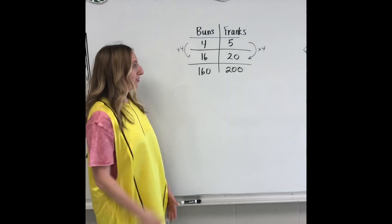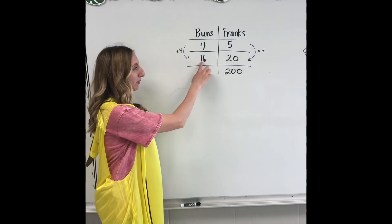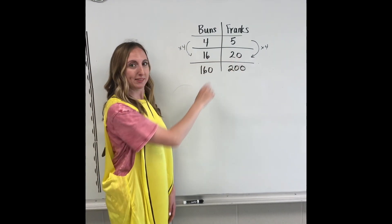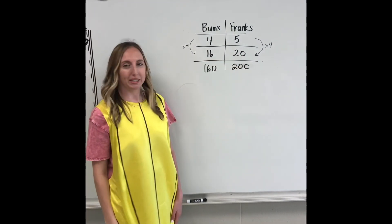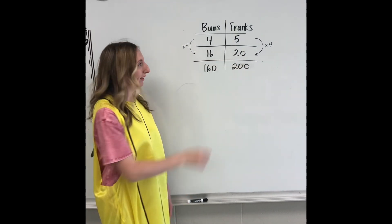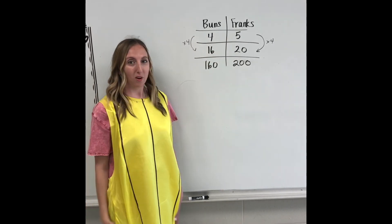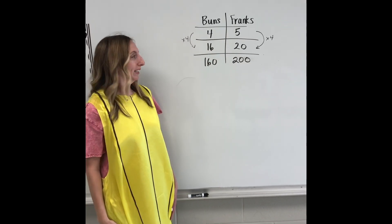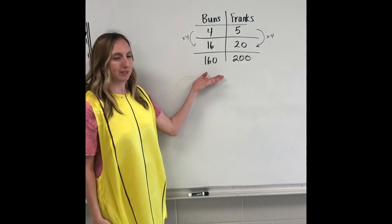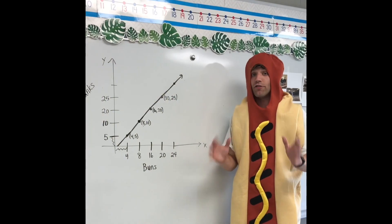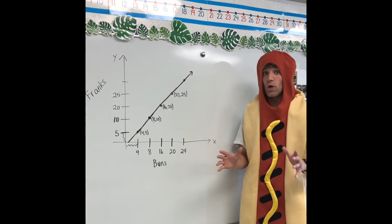Our original amount of buns to Franks — 16 to 20 — is equivalent to 4 to 5, but it's also equivalent to 160 to 200. Now to finish out, we have to put our equivalent ratios into our coordinate plane.